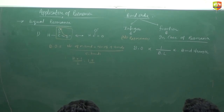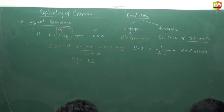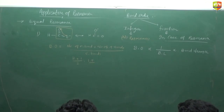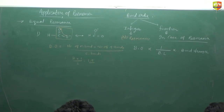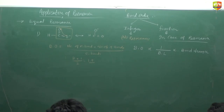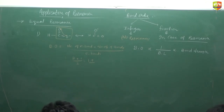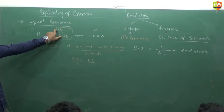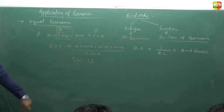A student asks: isn't the formula just the number of bonds divided by sigma bonds? The answer is no. We have 2 sigma bonds and 1 pi bond, so it is 2 plus 1 divided by 2, giving 1.5.